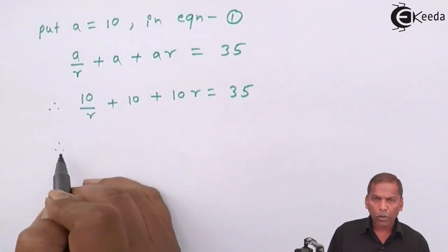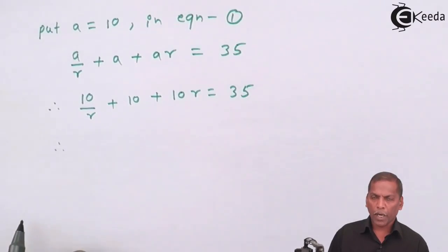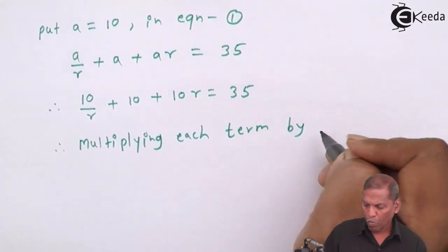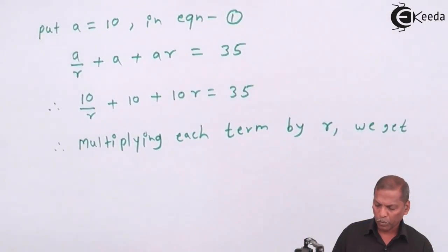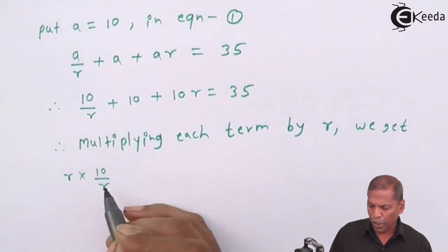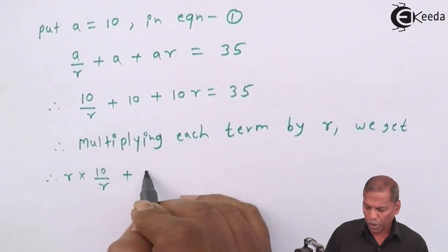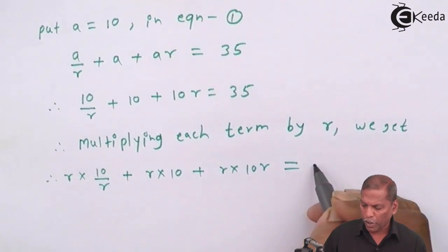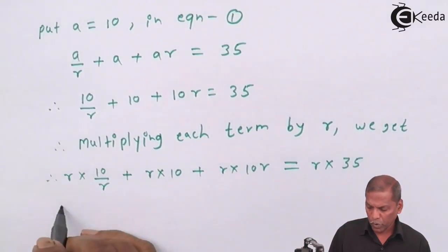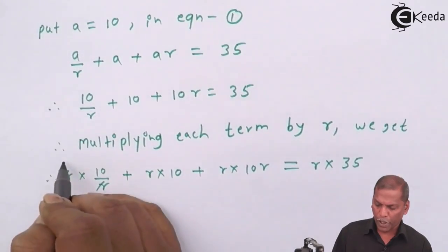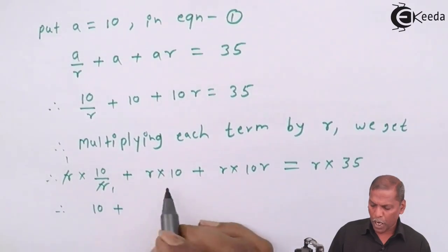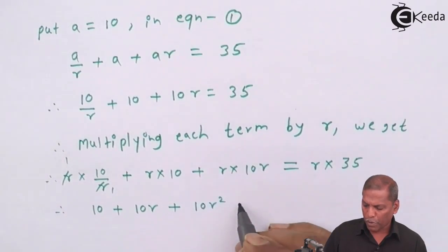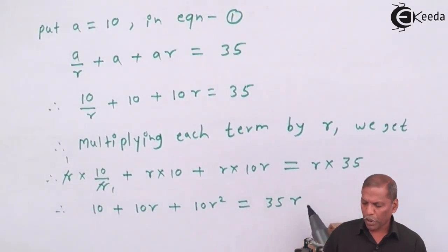Now to remove the fraction, we multiply each term by R. So we get R × (10/R) + R × 10 + R × 10R = R × 35. Here we cancel R from numerator and denominator, leaving 10 + 10R + 10R² = 35R.